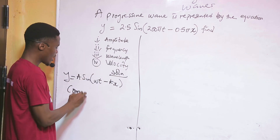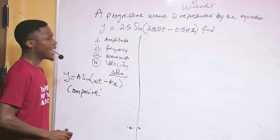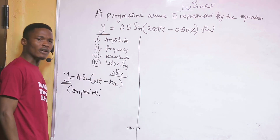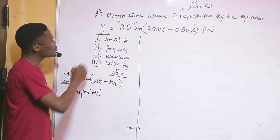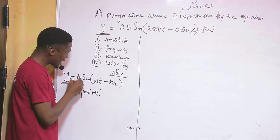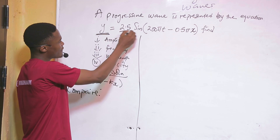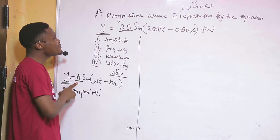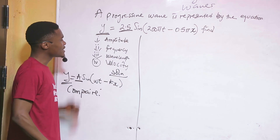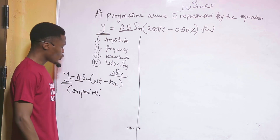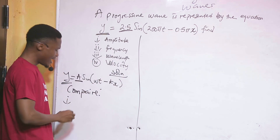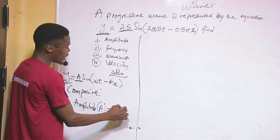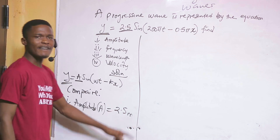After establishing the standard equation, we compare. Ask yourself: does the standard equation have y? Yes. Does the given equation have y? Yes. Does the standard equation have A? Yes. Does the given equation have A? No — it has a number in that position. If a number occupies the position of A, that number is A. So amplitude A equals 2.5 meters.